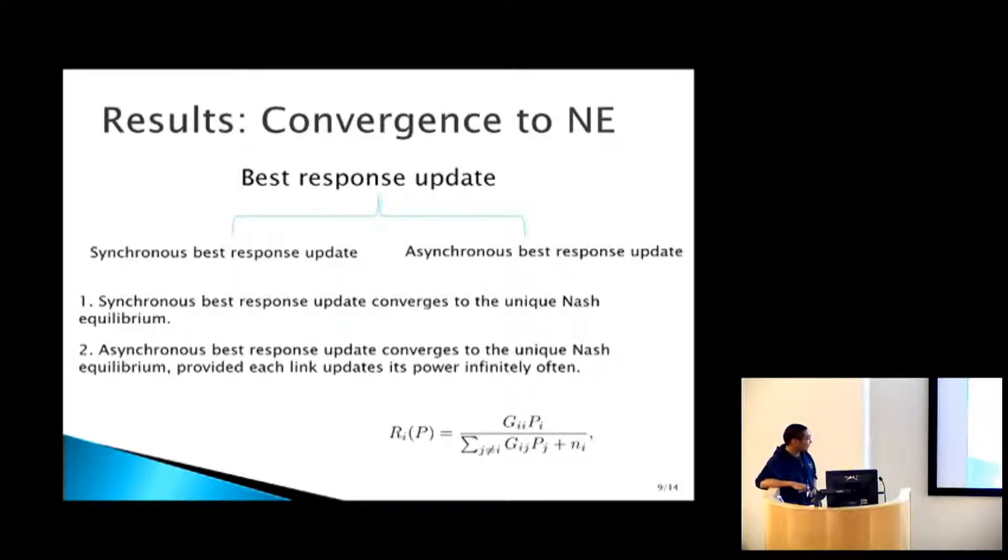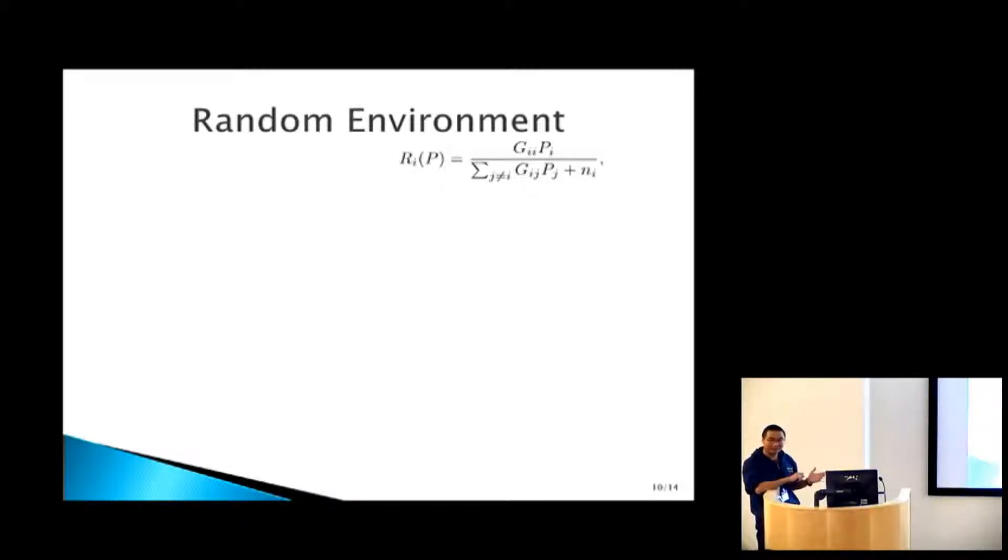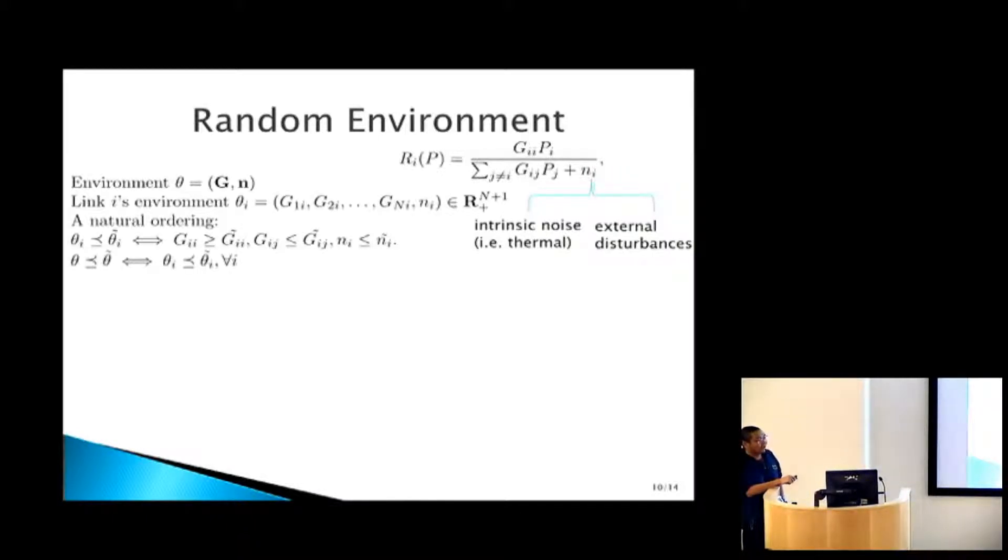Now if everybody starts doing that, as I mentioned before, the G matrix and then the noise will be time varying. So it's interesting to think about what would happen to best response updating in this uncertain environment, and what could characterize certain stochastic stability type of results for best response update. Let's consider the random environment. First of all, the noise here can include not only the NI, which is originally the thermal noise, but also any external disturbances. Suppose someone else from some external system is also walking around disturbing you. You could also put that there.